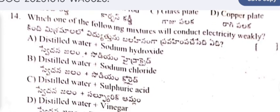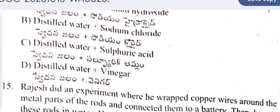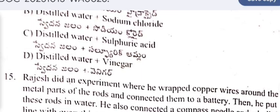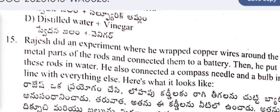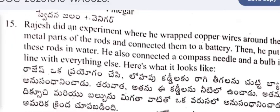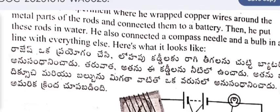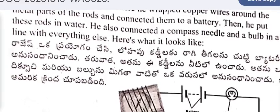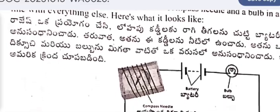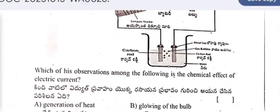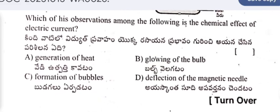Question 13: Which one of the following mixtures will conduct electricity weakly? Distilled water plus sodium hydroxide, distilled water plus sodium chloride, distilled water plus sulfuric acid, or distilled water plus vinegar. Question 14: Rajesh did an experiment where he wrapped copper wires around metal rods and connected them to a battery, then put the rods in water along with a compass needle and a bulb. Which observation is the chemical effect of the electric circuit?